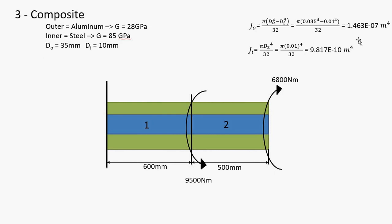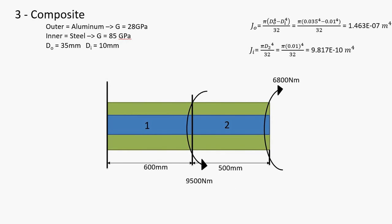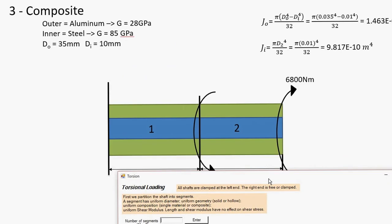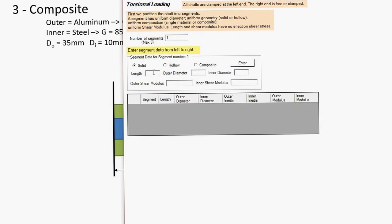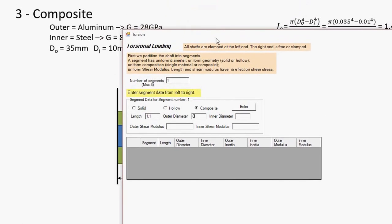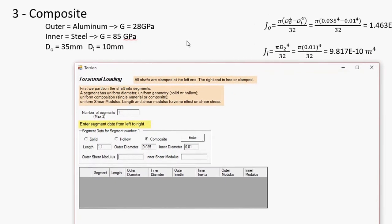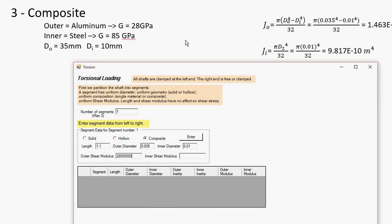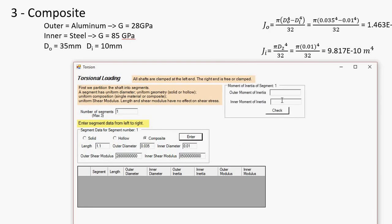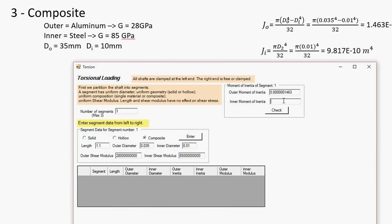I have already calculated the polar moments of area. Let's go ahead and enter this into the program. Breaking up into segments — since the geometry is all the same, there's just one segment, 1.1 meters long. Select composite, enter the outer diameter, inner diameter, outer shear modulus 28 times 10 to the 9th Pascals, inner 85 gigapascals, then the outer moment of inertia and the inner moment of inertia.